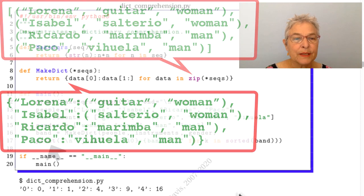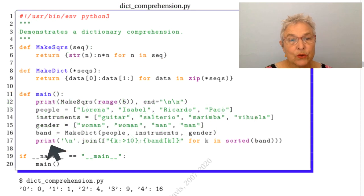And then we're going to print it up. When we print it, we do the new line join of the sorted band, and that'll sort by the keys, which are the names.